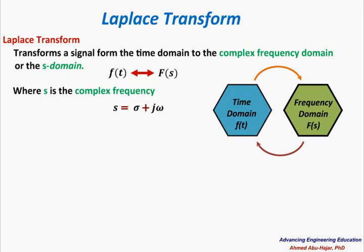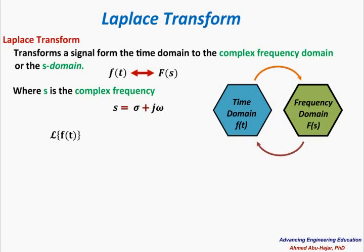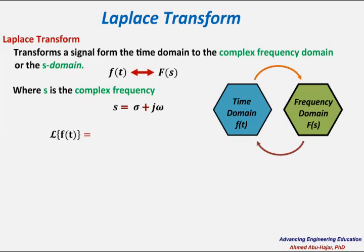To get the Laplace transform of f of t we use the notation: script L bracket f of t, meaning 'get me the Laplace transform of f of t.' So the Laplace transform of f of t equals capital F of s, which equals the integral from negative infinity to infinity of f of t times e to the minus s t, dt.